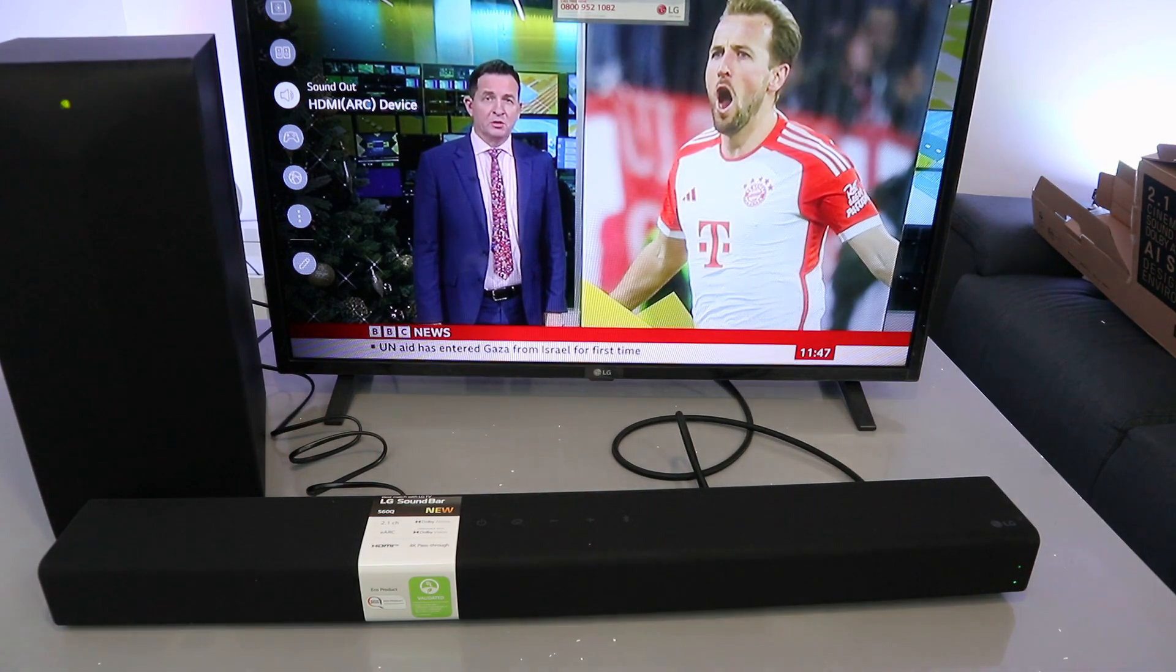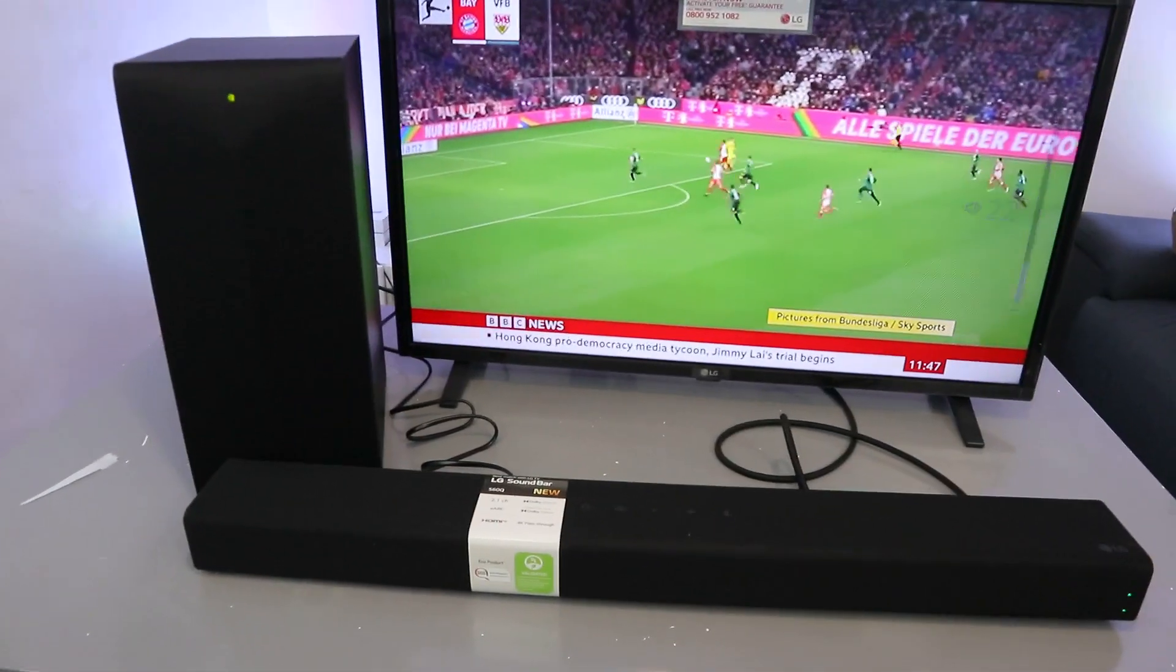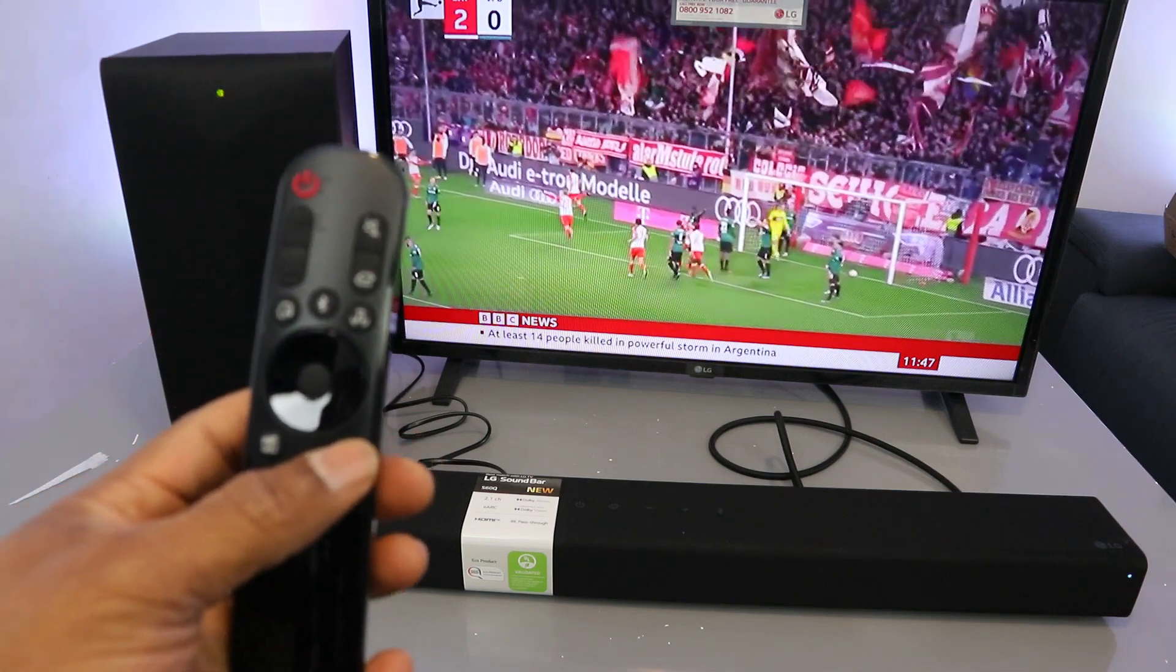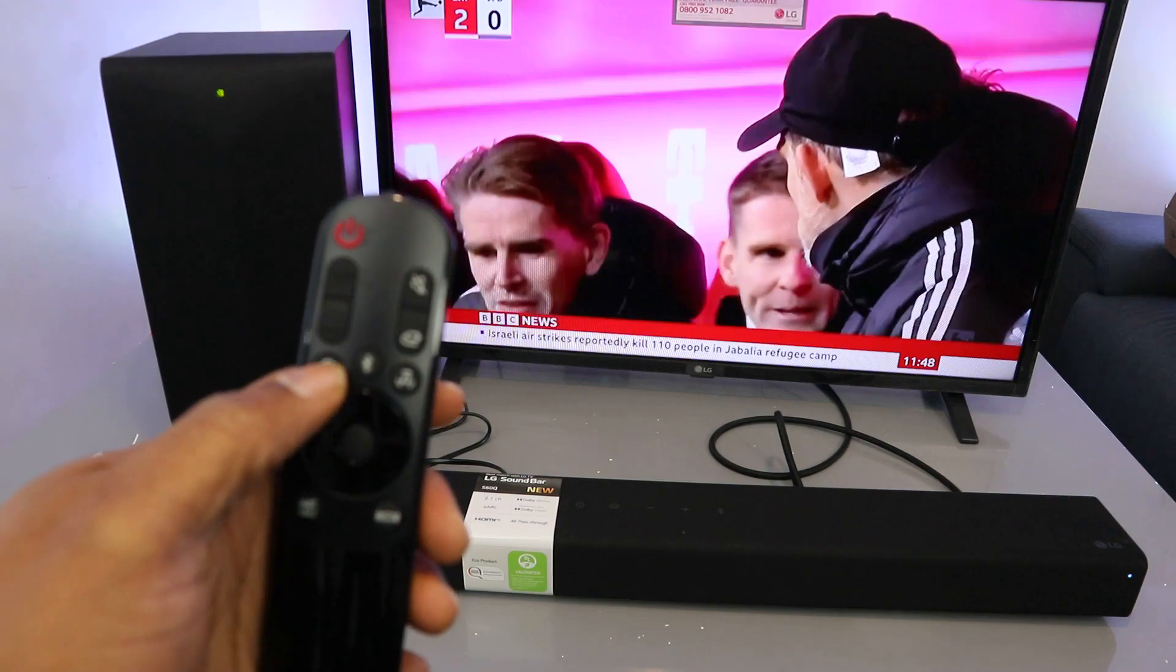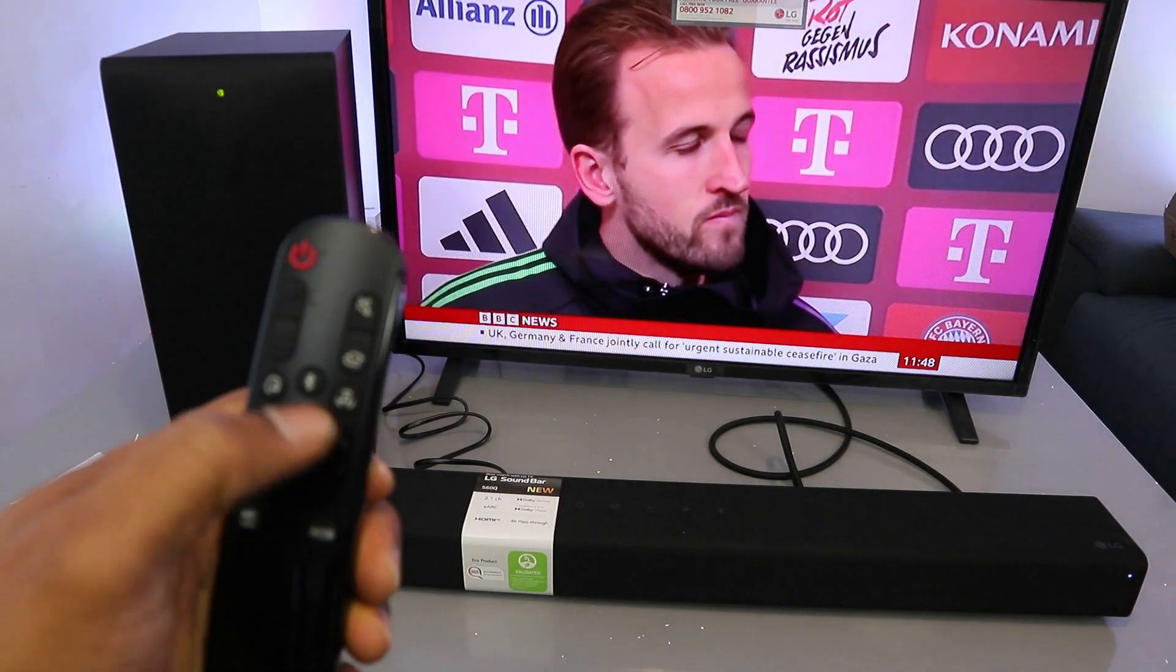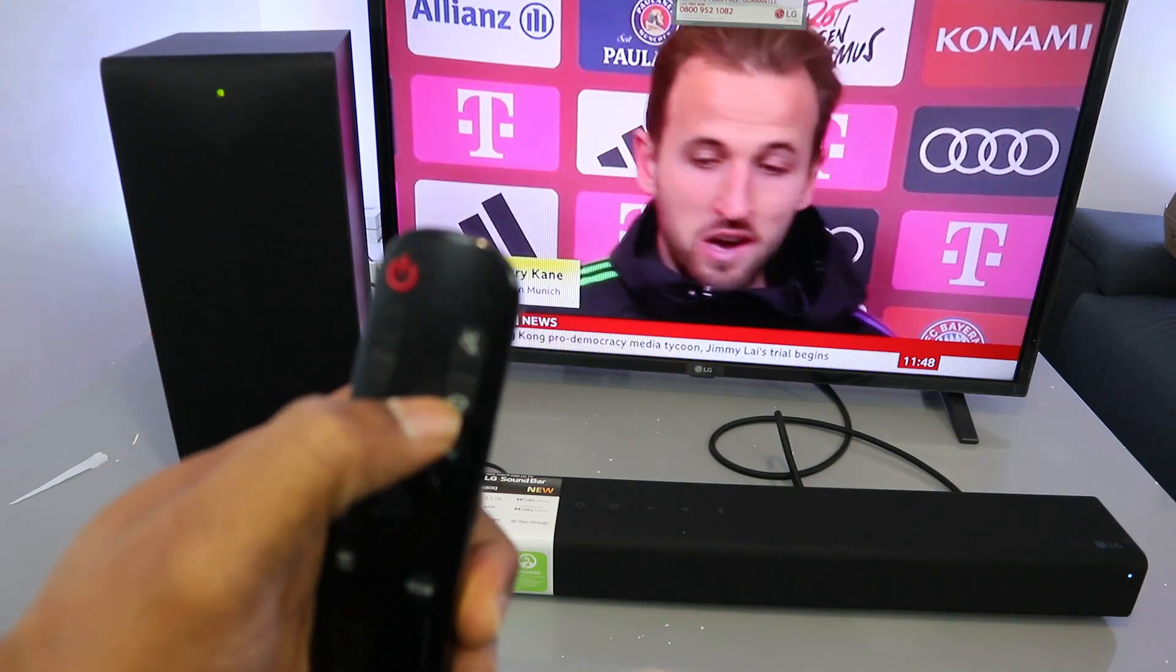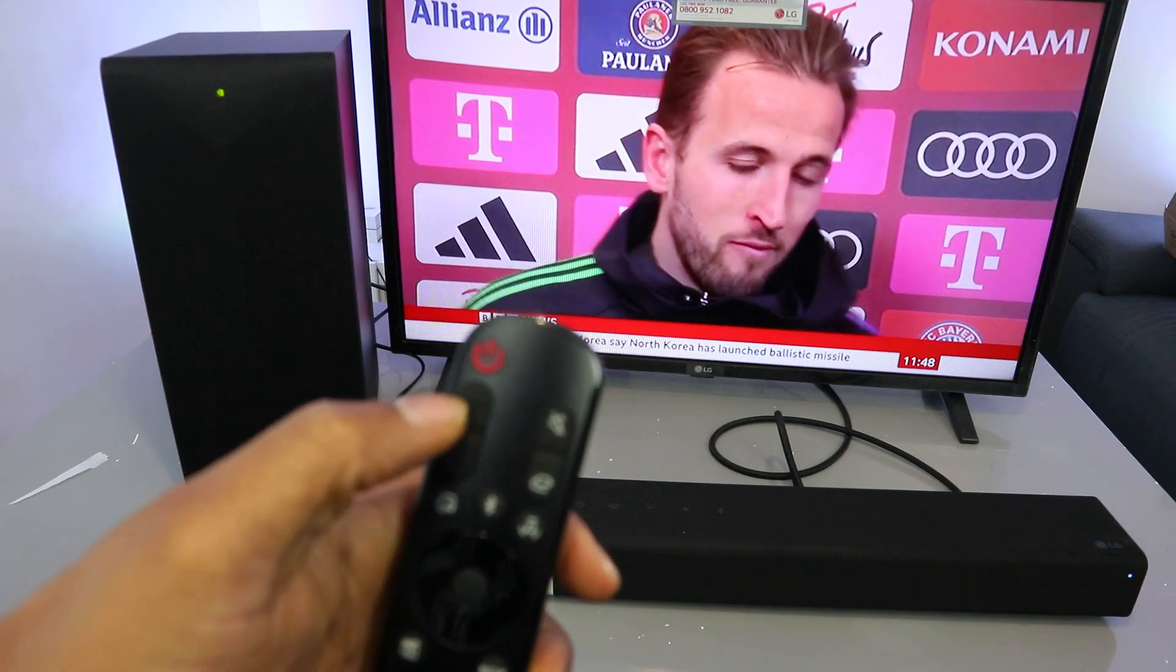With this remote control, you can select game, this button here is cinema, and this button here is AI Sound Pro. This button here is music. The center one is for pause and play, this button here is mute, and this is for you to select input to select HDMI, optical, USB, and Bluetooth. You can increase the volume and decrease the volume.